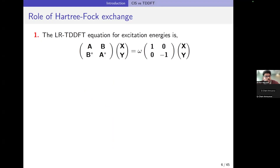Self-interaction error in TDDFT can be countered by using a sufficient amount of Hartree-Fock exchange, which points towards the need for using hybrid functionals to do x-ray spectroscopy with TDDFT. The linear response TDDFT equation for excitation energies is, as you can see here, where you have the A and B matrices, and you get the excitation energies as eigenvalues, with X and Y as your excitation and de-excitation amplitudes.